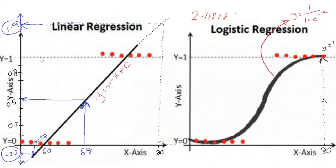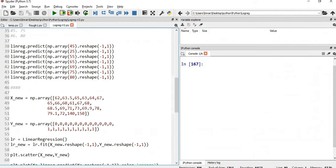We have overcome the error in linear regression where predicted values go beyond the boundary of 0 and 1. We have also handled the outlier issue, which I will show you through Python code.